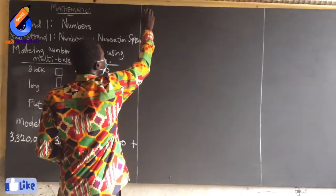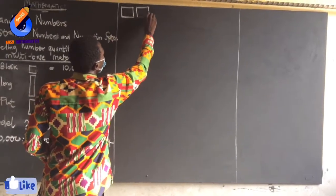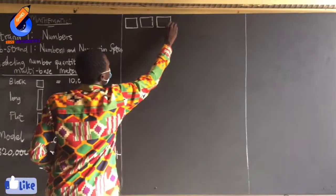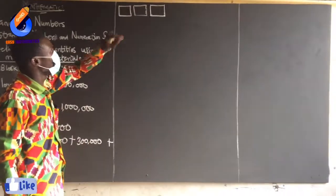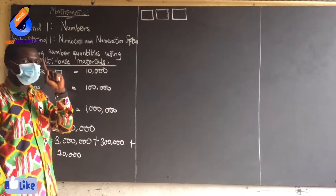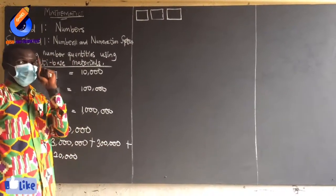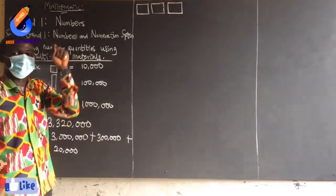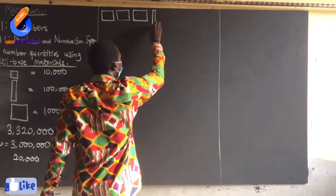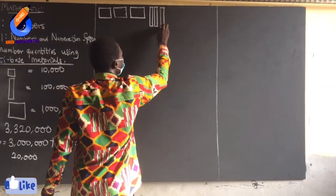So I'll draw 3 flats, which represents 3 million. That's 1 million, 2 million, 3 million. Then the long — 1 of it is 100,000, and we have 300,000 here. So if 1 is giving me 100,000, then 3 will give me the 300,000. So I'll draw 3 longs.